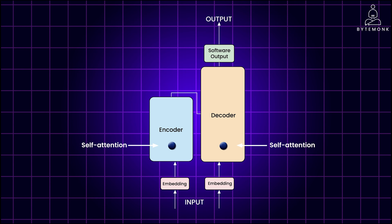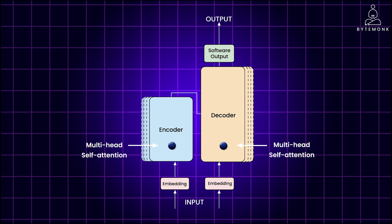To capture different aspects of language, transformers use multi-headed self-attention, meaning the model learns multiple sets of attention weights in parallel. While it's tempting to think one head might focus on animals and another on activities such as crossing the street, the exact roles of these heads develop organically during training and are not specified upfront.